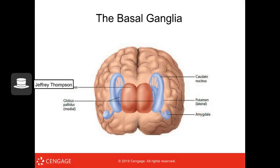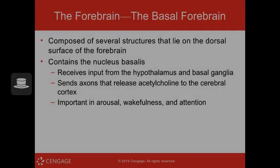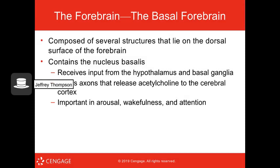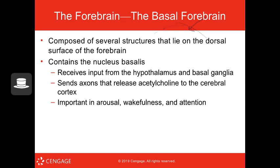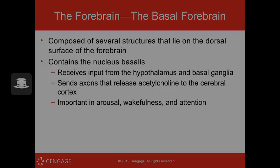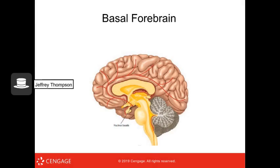Here we can see the parts of the basal ganglia. The basal forebrain consists of several structures on the dorsal surface of the forebrain. It contains the nucleus basalis, which receives input from the hypothalamus and basal ganglia and sends axons releasing acetylcholine to the cerebral cortex. This is important for arousal, wakefulness, and attention. A diagram shows the nucleus basalis with axons branching out to different parts of the brain.